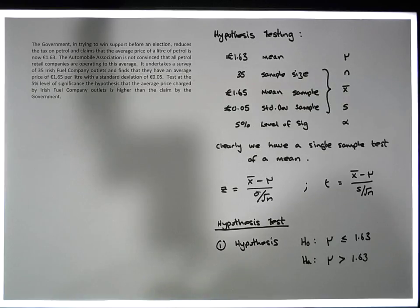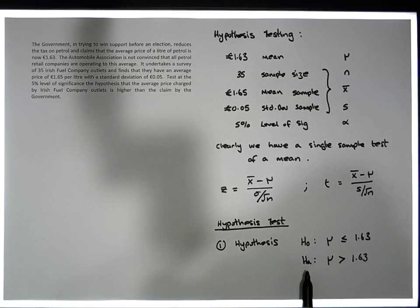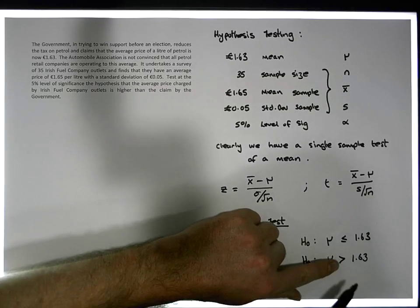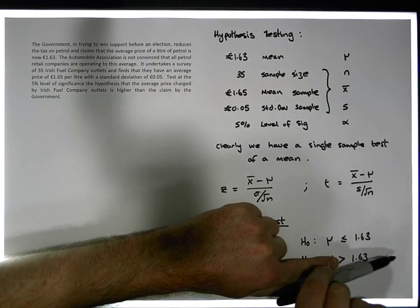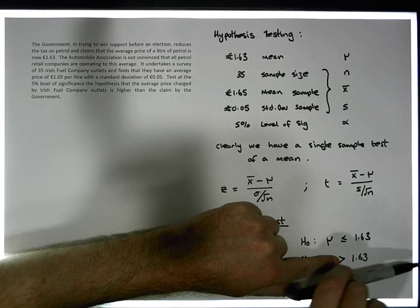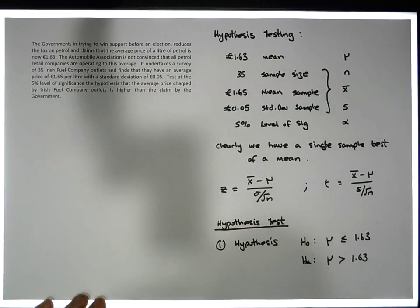The alternative always tells us the directionality of the test — always tells us the side of the distribution where we will reject from. In this case the arrow is pointing to the right-hand side, so this is a right tail test.